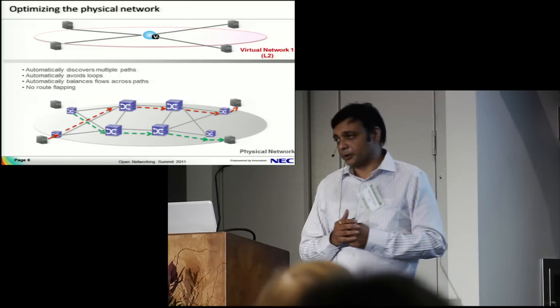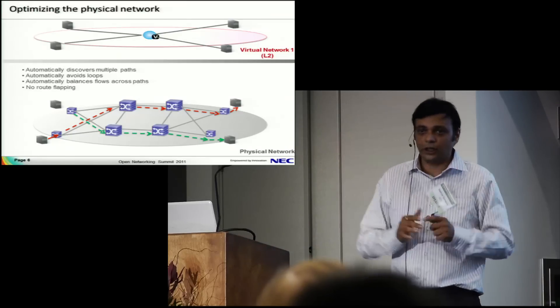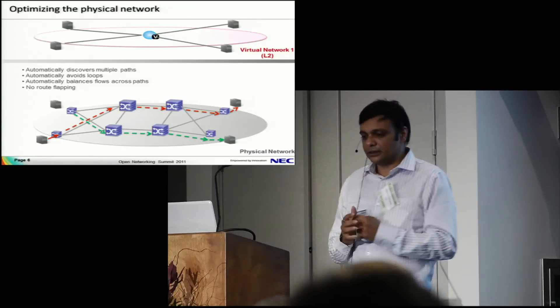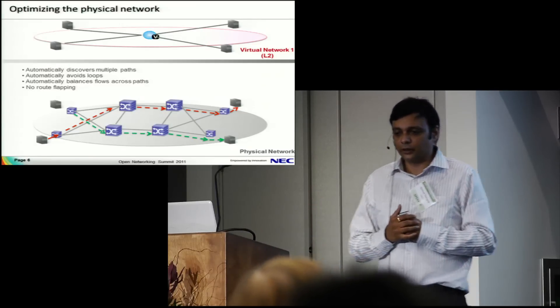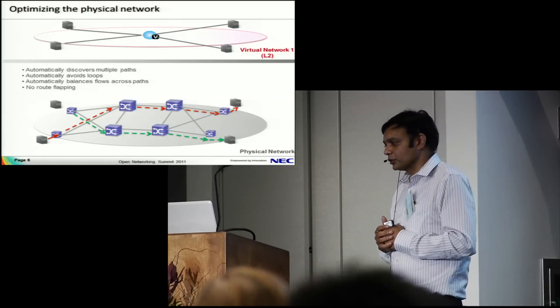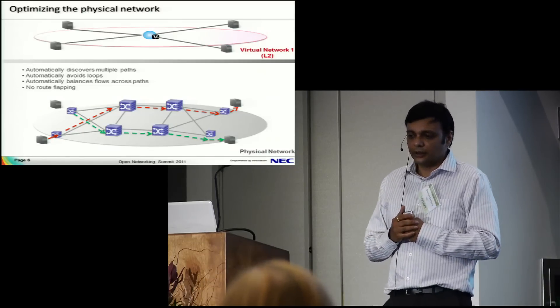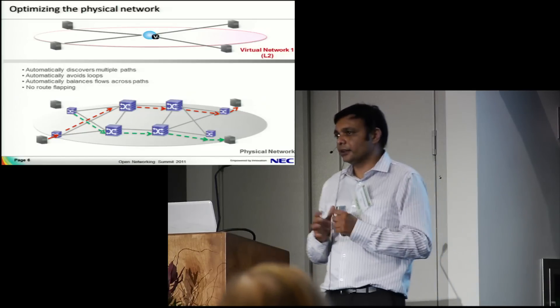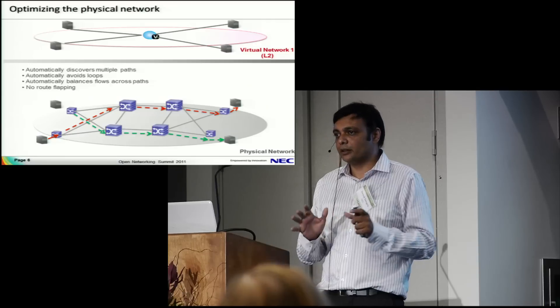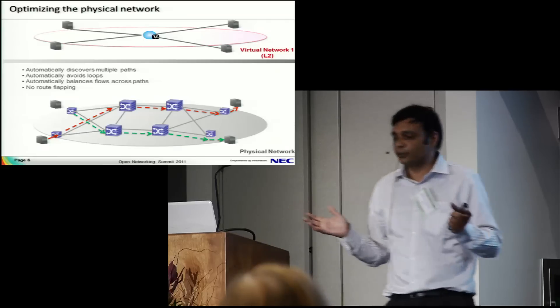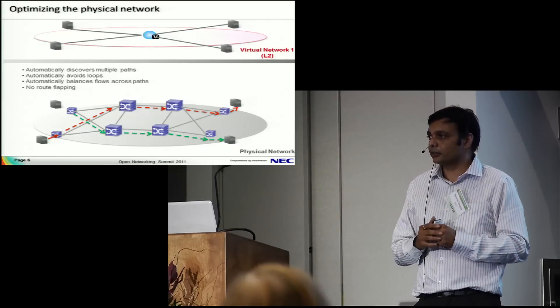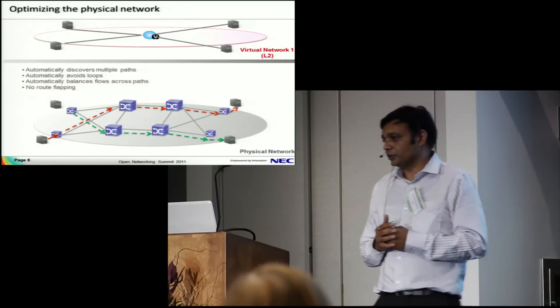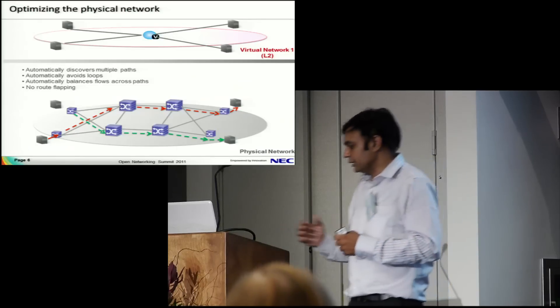The next part is about optimization. You can define a virtual layer 2 network. Since there's fine-grained control from OpenFlow to create paths, you can let the controller compute the path and create multiple paths without the end user or operator knowing how it's done. You can discover multiple paths when a new switch or link is added and avoid loops because you have complete topology understanding.